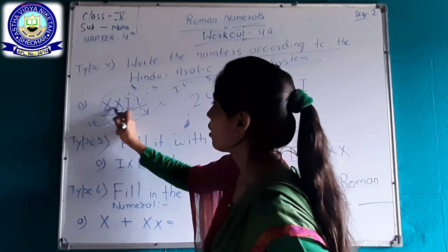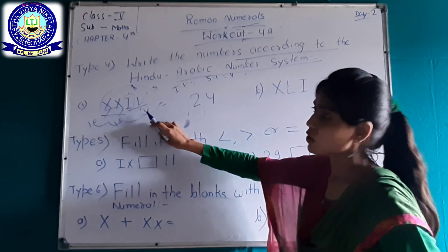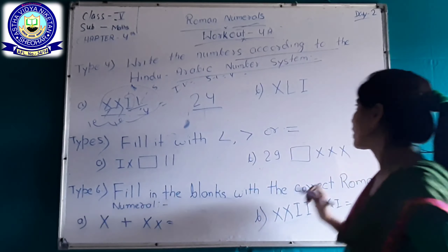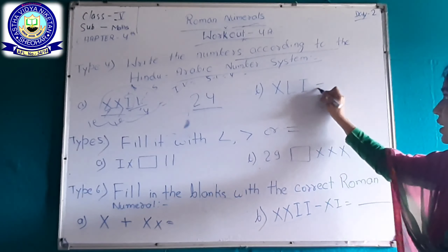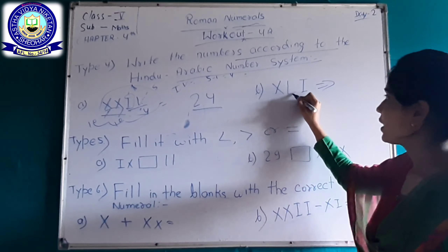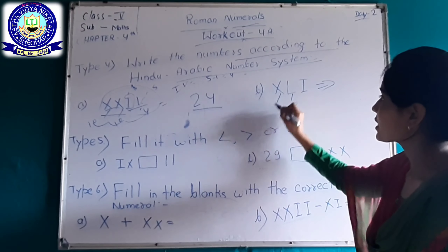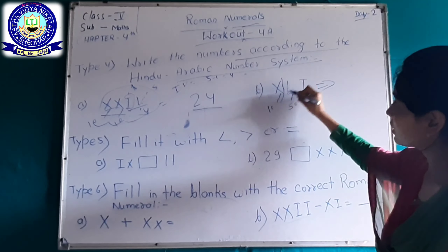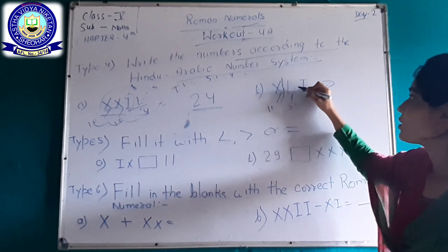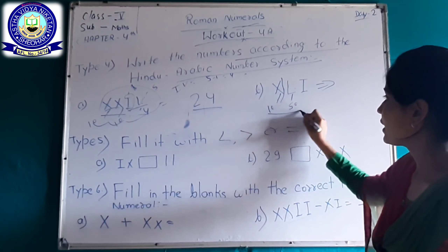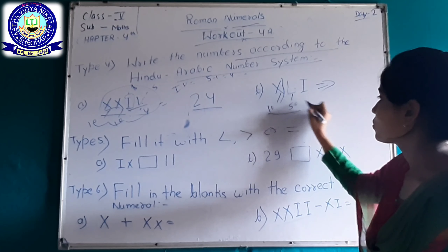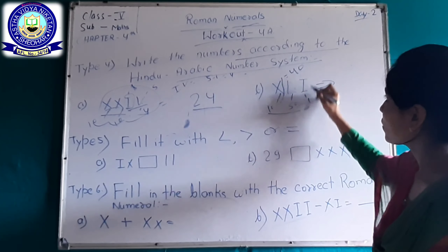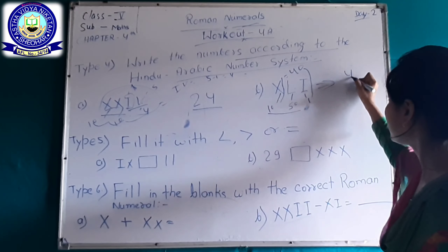Here is a second example: L means 50 and X means 10. This X appears just before the larger number L, so it is subtracted. The value of XL equals 40. And I means 1. So 40 plus 1, we get 41.